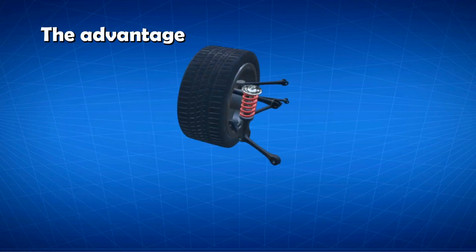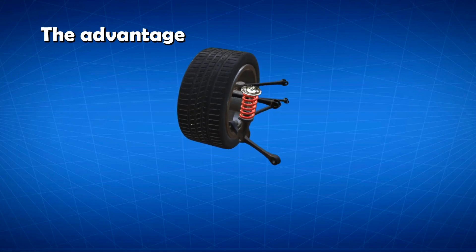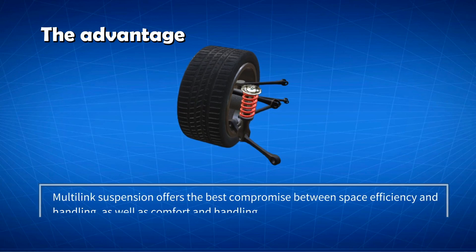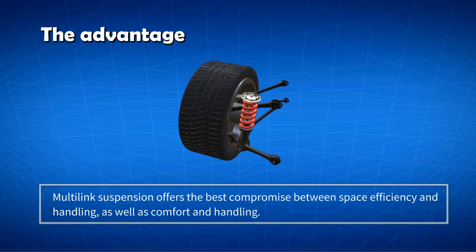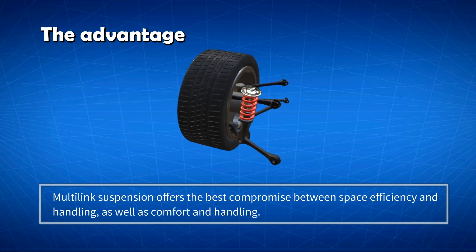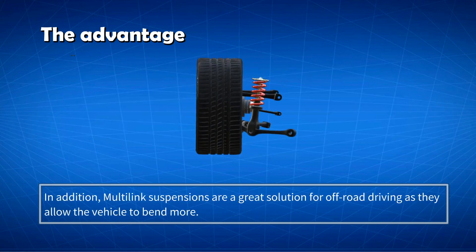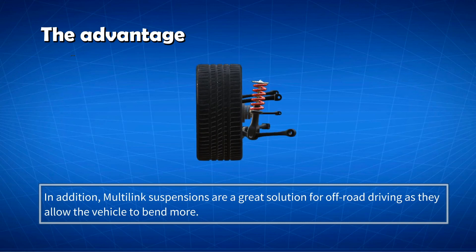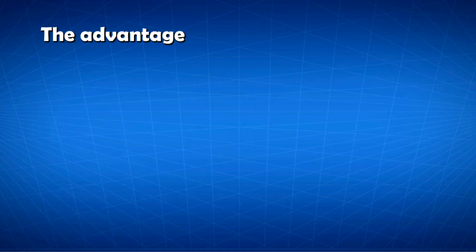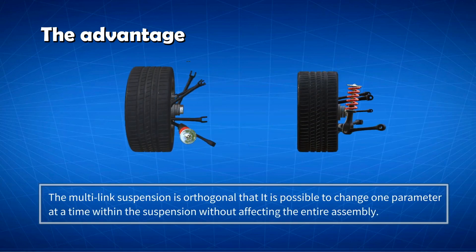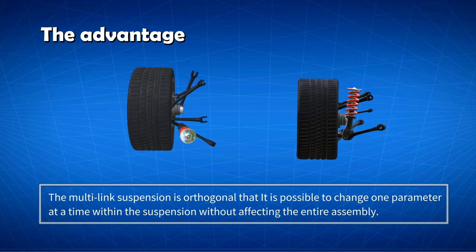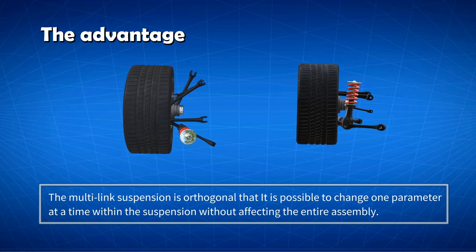Multi-link suspension is considered to be the best independent system for production vehicles, as it offers the best compromise between space efficiency and handling, as well as comfort and handling. Multi-link suspensions are also a great solution for off-road driving, as they allow the vehicle to flex more. In its simplest form, the multi-link suspension is orthogonal — meaning it is possible to change one parameter at a time within the suspension without affecting the entire assembly.